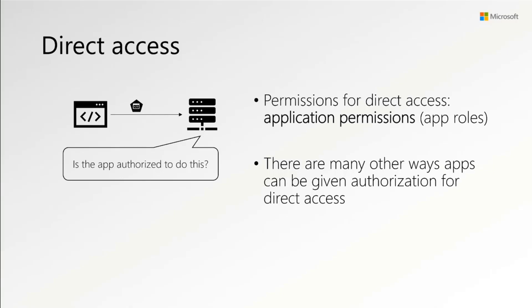For direct access — just the client accessing the resource — the resource needs to make an authorization decision. It's asking a very simple question: is the app authorized to do this? More generally, is the subject of the token authorized to take this action? On the identity platform, we offer a type of permission for direct access called app roles. When app roles are granted to other applications, we change the name and call them application permissions. App roles and application permissions are interchangeable in this conversation — they're just a way of expressing authorization used for direct access.